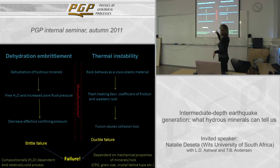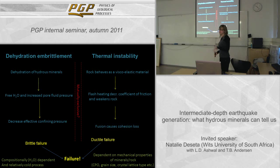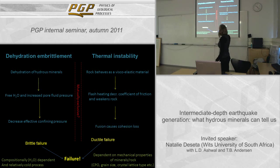Historically, dehydration embrittlement has been favored for inducing intermediate-depth earthquakes because it has been easier to recreate experimentally. Thermal instability has been less favored because the constants used in the defining equations are harder to constrain, and it has also been harder to produce experimentally. So that's really the only reason why it hasn't been favored — and this is the idea I'm basically going to try and sell to you today.